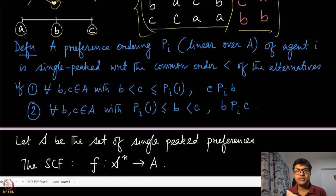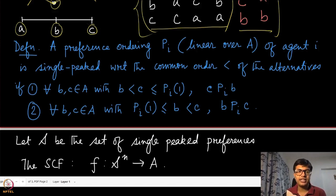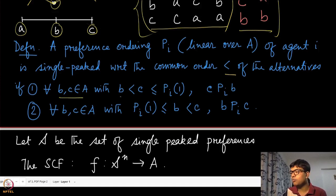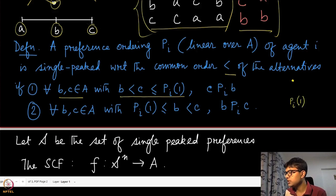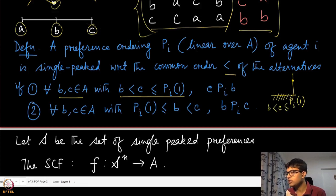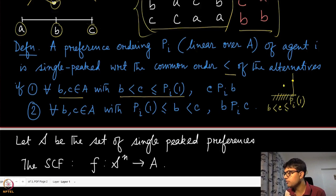Formally, a preference ordering p_i (a complete, linear ordering over A with no indifferences) of agent i is single-peaked with respect to the common ordering < if two conditions hold. Let p_i^1 denote agent i's top alternative (the peak). If b and c are both on the left side of the peak with b to the left of c (i.e., b < c ≤ p_i^1), then by single-peakedness c must be more preferred than b under p_i.